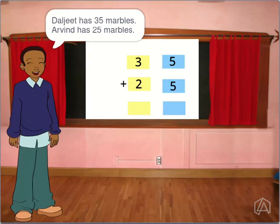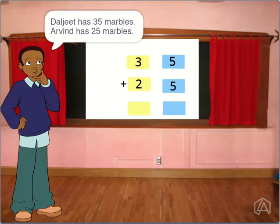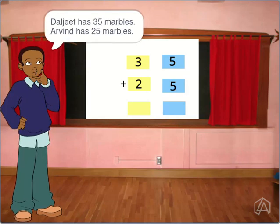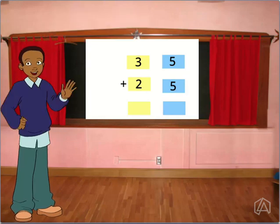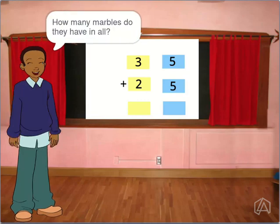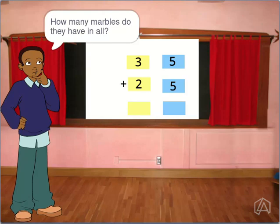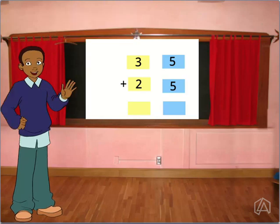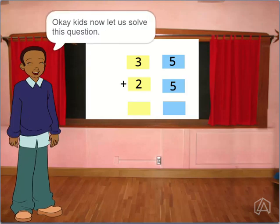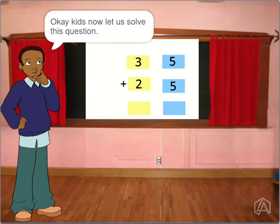Daljit has 35 marbles. Aravind has 25 marbles. How many marbles do they have in all? Ok kids, now let us solve this question.